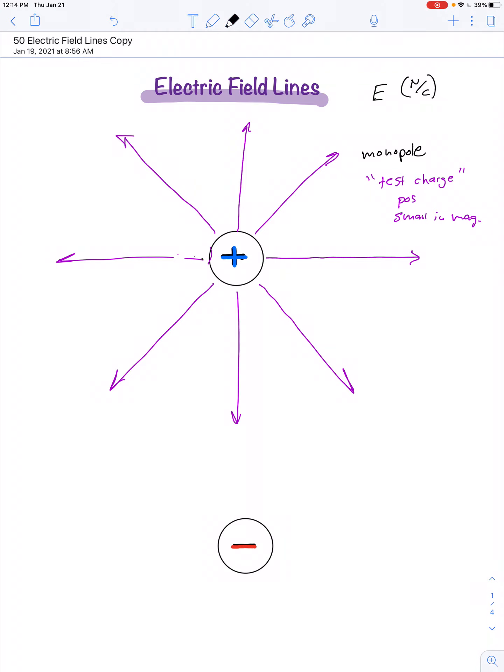Notice that the field lines are close together here. So that's a way of saying that the field is strong or large in magnitude. As we get farther away, the field lines are getting farther apart, and so that's an indication that the field is relatively weak. So, the strength of the electric field is indicated by the density of field lines.